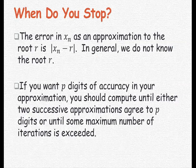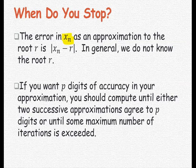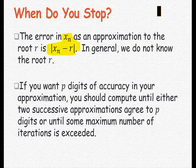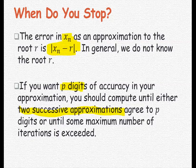When do we stop? The error in xₙ as an approximation to the root r is |xₙ - r|. In general, we do not know the root r. If you want p digits of accuracy, compute until either two successive approximations agree to p digits, or until some maximum number of iterations is exceeded.